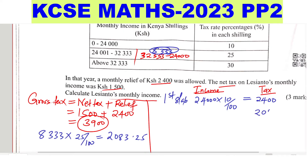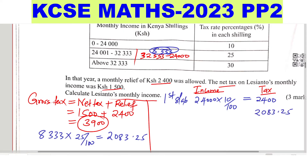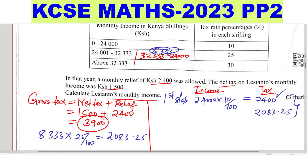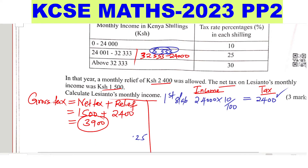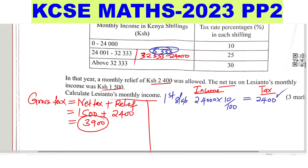When you add 2,083.25 to the 2,400 from the first slab, you'll notice it exceeds 3,900 — in fact it's above 4,000. So we don't need the whole second slab amount. We need to find the exact amount in the second slab that is taxed. Since we don't know that amount, we let it be represented by y, because it is not the full 8,333.